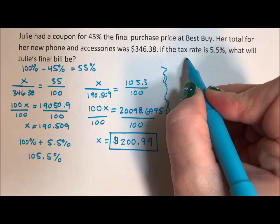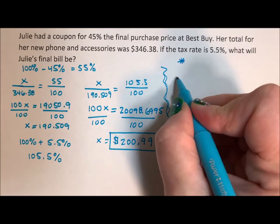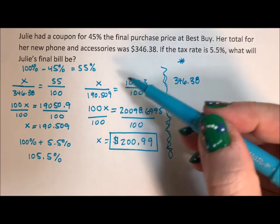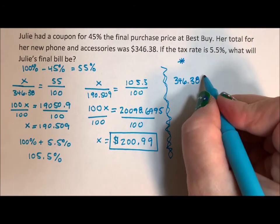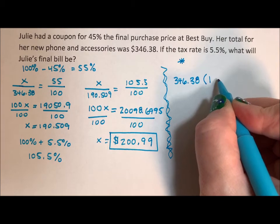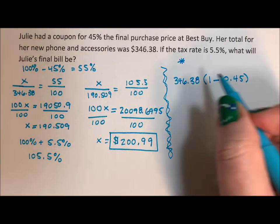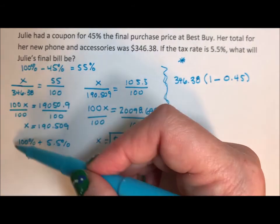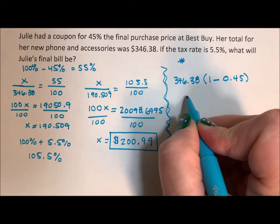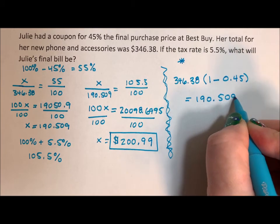And this is, you know, the way I would like students to move towards going is you start with your $346.38, and you move everything to decimal instead of percent. So 100 as a decimal is one, and you're taking away 45%. So discount of 45 minus 0.45. And you just throw that into your calculator. So instead of doing all of this, you just do one minus 0.45. You throw that into your calculator and you get 190.509 in one step.